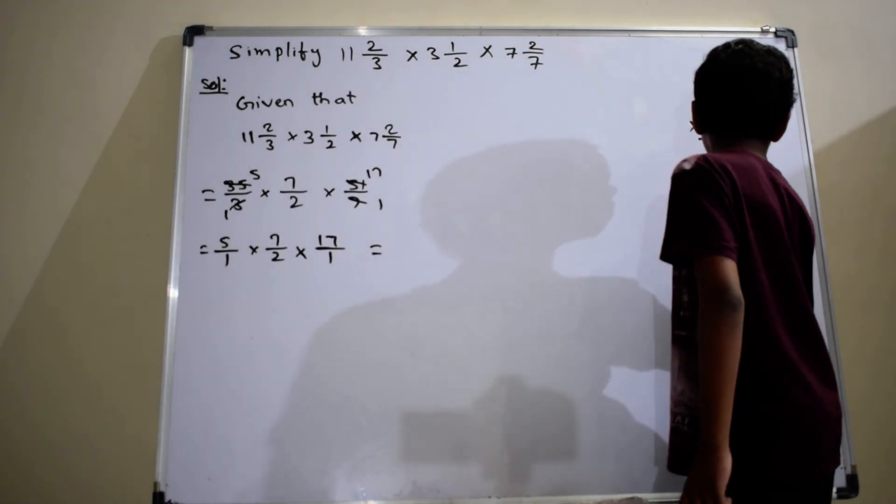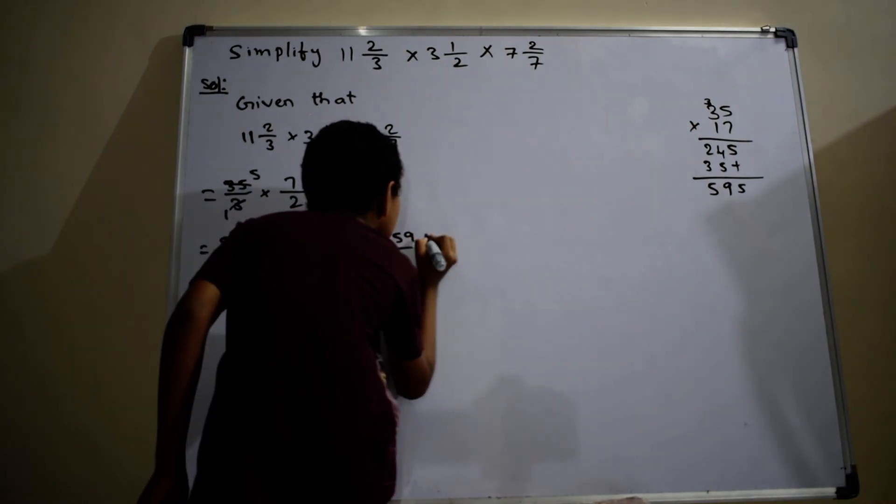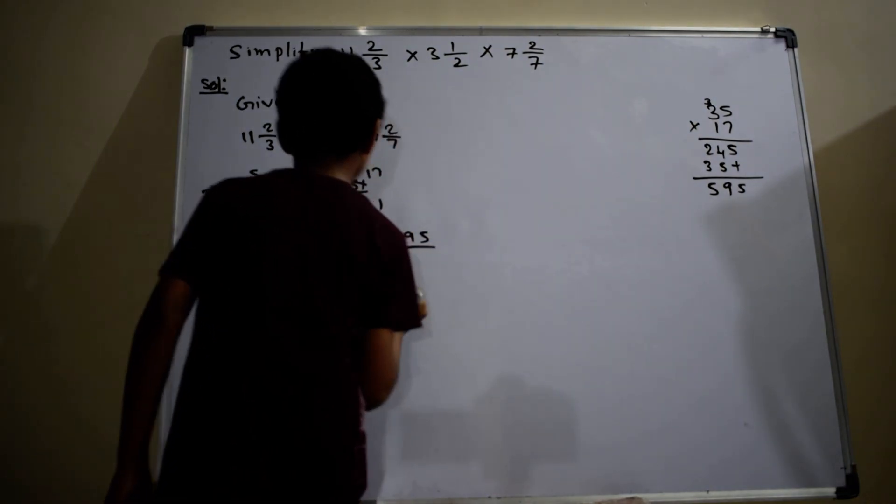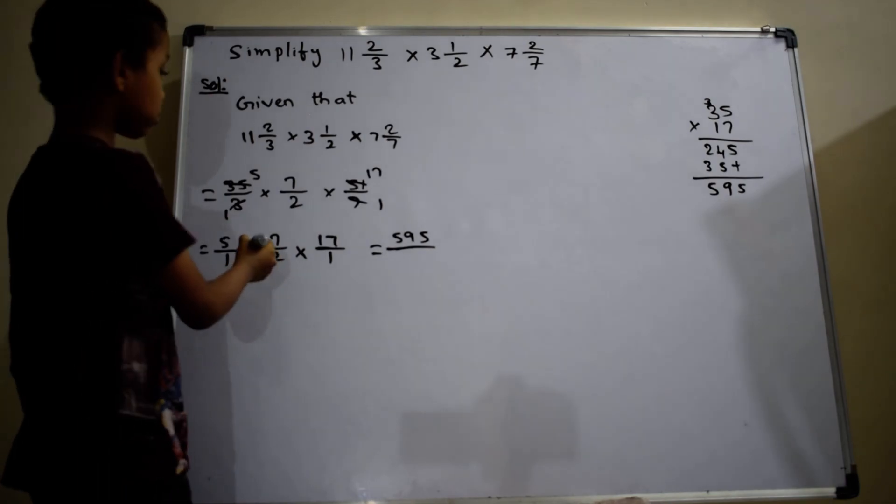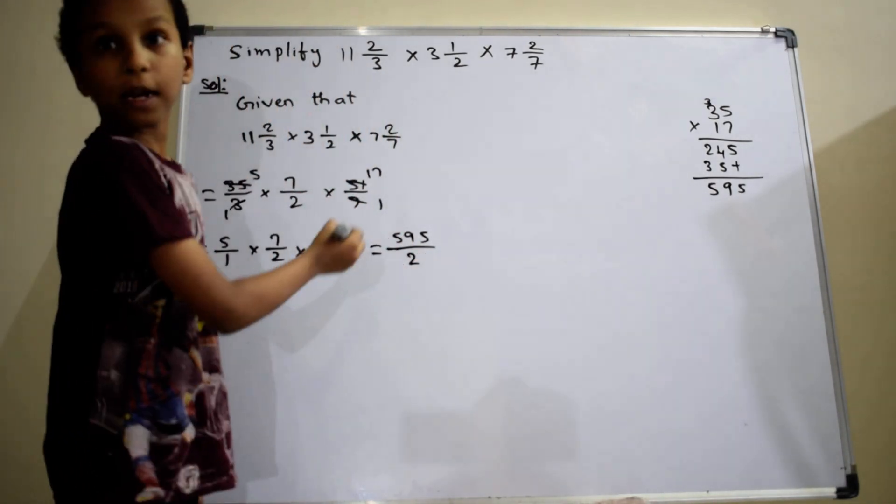Which equals 595 by 1 into 2, 2 into 1, 2, 595 by 2.